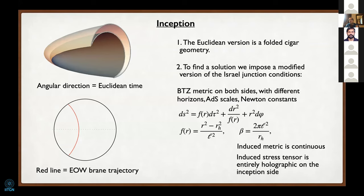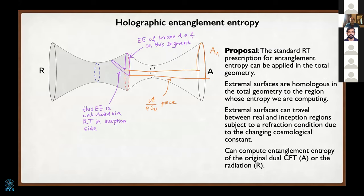That was the Ryu-Takayanagi type derivation. We can also prove this by the replica trick. You cut open the Euclidean geometry and then replicate it multiple times, sewing it together. To compute trace of the density matrix of the radiation to the nth power, you replicate the manifold and sew the boundaries together in the usual Renyi way. You're supposed to fill in this boundary with a replica-symmetric saddle point of the bulk gravity theory and evaluate the action.